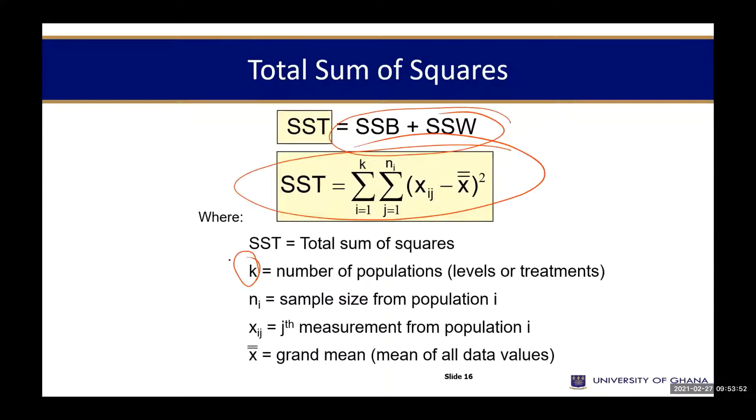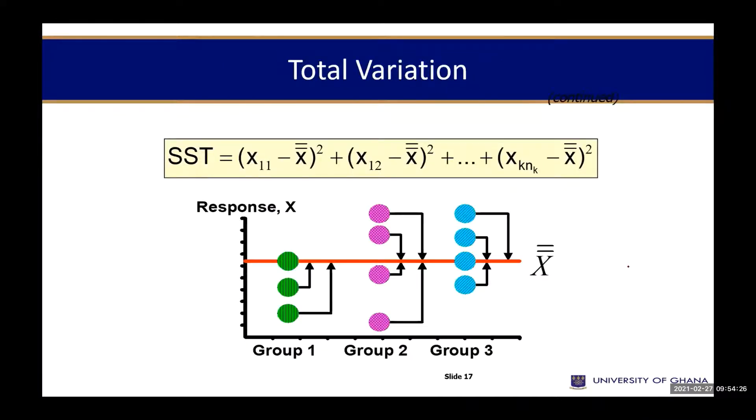Then sample size, as we've been discussing, we need to know the sample size for each of the vaccine that we are going to use. Then X bar is still the mean. But now we have what you call X bar bar, that's called a grand mean. The grand mean is equal to the sum of all the population means divided by the number of populations. We will estimate it quickly.